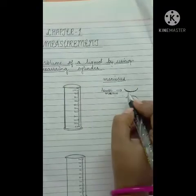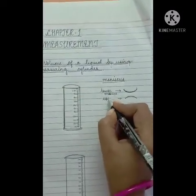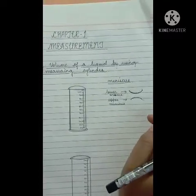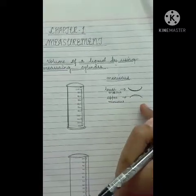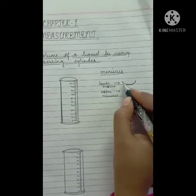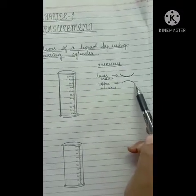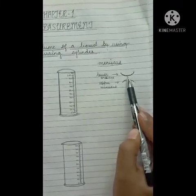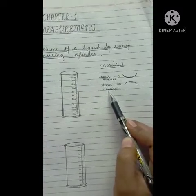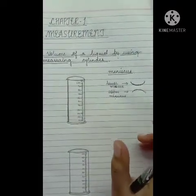The other type is the upper meniscus. A very common example is mercury. When you pour mercury into a vessel, it forms an upper meniscus — the surface curves upward. So when the surface curves downward it is called a lower meniscus, and when it curves upward it is called an upper meniscus.